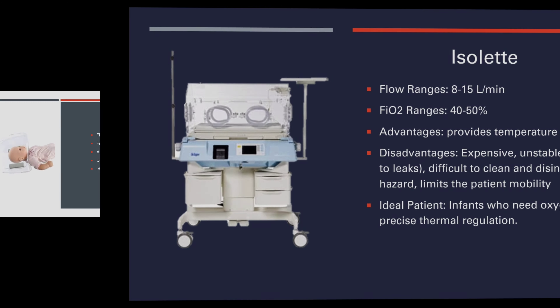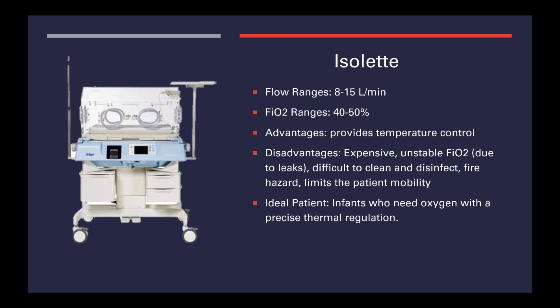The isolette has flow ranges of 8 to 15 liters per minute and FiO2 ranges of 40 to 50 percent. Advantages: provides temperature control. Disadvantages: expensive, FiO2 is unstable due to leaks, difficult to clean and disinfect, fire hazard, and limits the patient's mobility. The ideal patient is an infant needing oxygen with precise thermal regulation — mostly newborn or premature babies. Thank you for tuning in and watching — I hope this was very helpful for you.